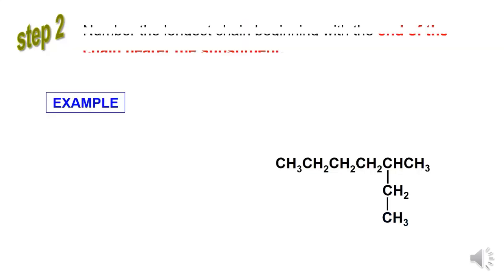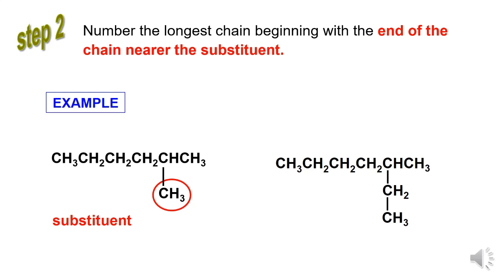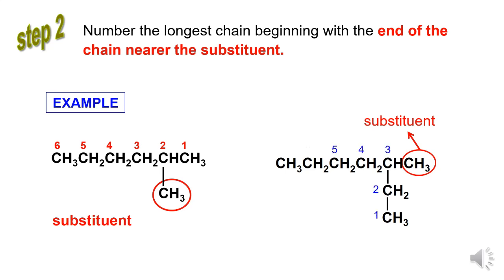Step 2: Number the longest chain beginning with the end of the chain nearer the substituent. Example: this structure has one substituent group, CH3. So start the numbering of the longer chain of carbon from right to left. Next example: this structure has one substituent group, CH3. So start numbering of the longer chain of carbon from here to the left side.